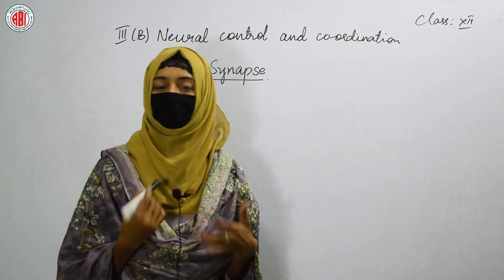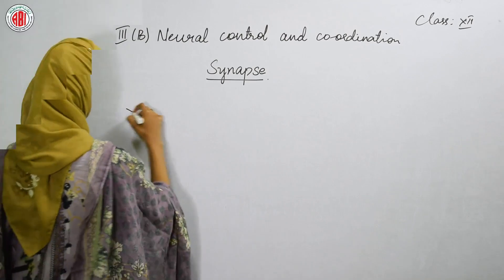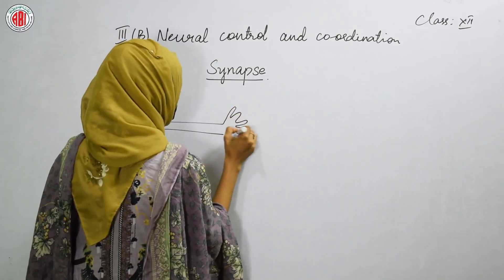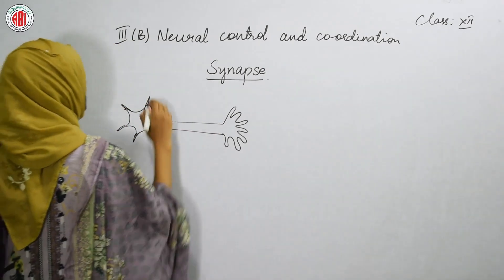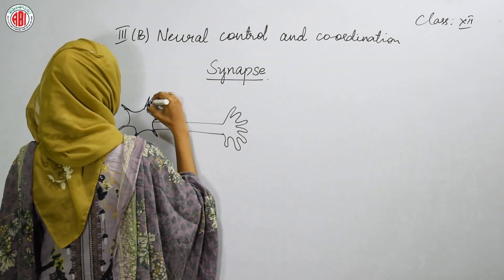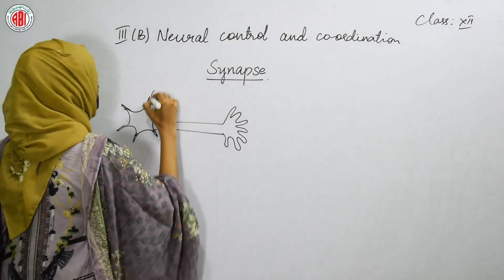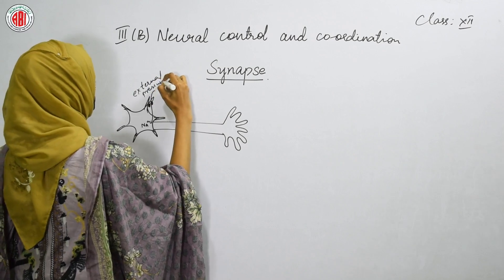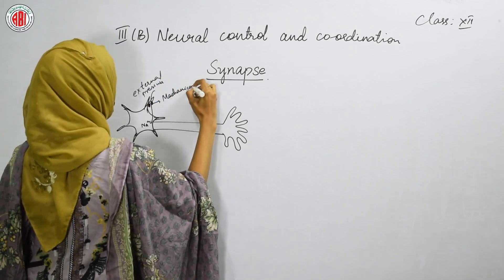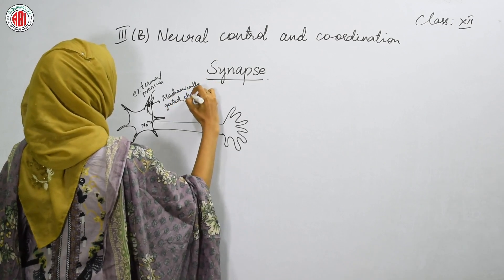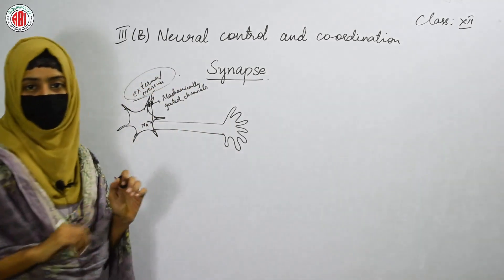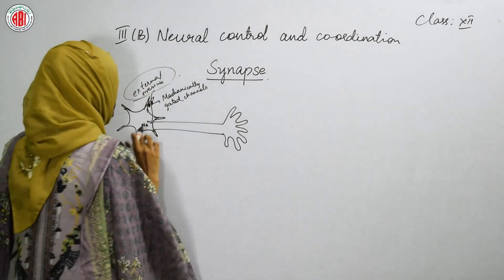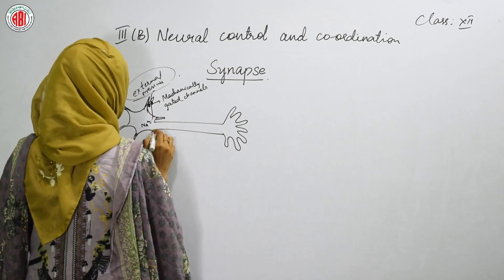We know that nerve cells are present, the dendrites are present, one extension can be seen that is our axon, and axon terminals will be there. We know that in the dendrites some channels are present that are called mechanically gated channels, through which the sodium enters due to external pressure. These channels get open — we call them mechanically gated channels. They get open because of the application of external pressure, and when they open, the sodium will enter into the cell.